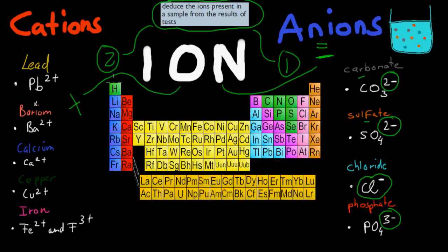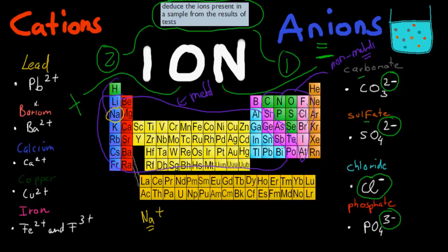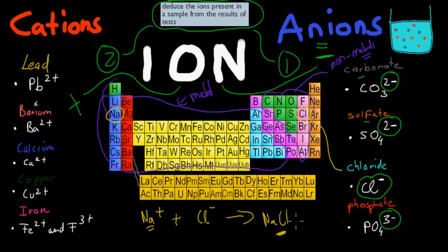The reason why is because cations come from this part of the periodic table — these are all generally metals and they're positively charged — whereas our anions come from this part, which are generally your non-metals. And when we have a non-metal and a metal coming together, especially the ions of those, they form a salt. So if we have Na, which is sodium — that's a cation, Na+ — combining with Cl, which is chloride, an anion, what will happen is we will form NaCl, which is a salt.